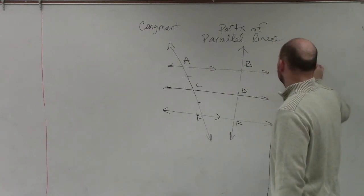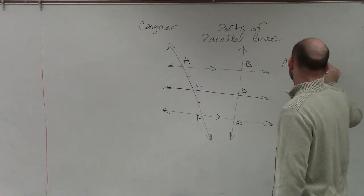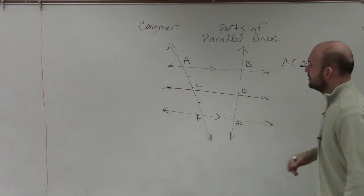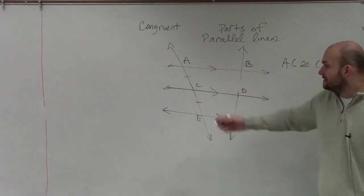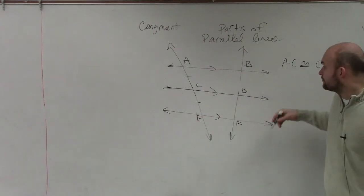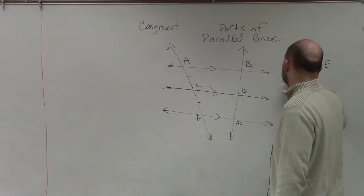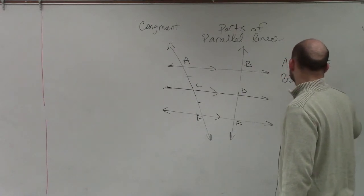So if you say AC is congruent to CE, and you have these three are all parallel lines, and these are congruent, then you can prove that BD has to be congruent to DF.